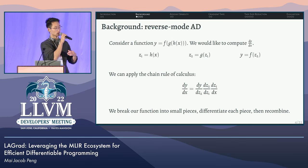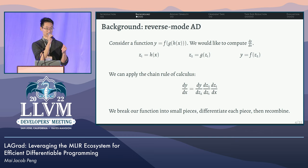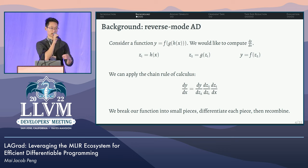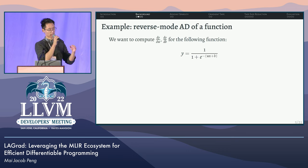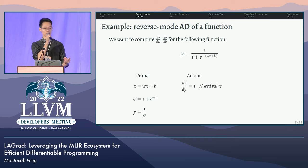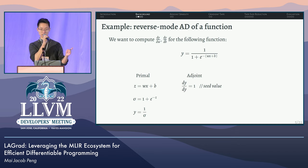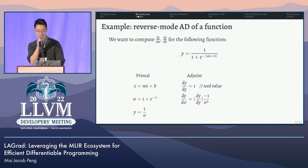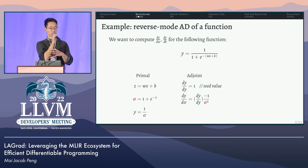I want to briefly go over some background with reverse mode AD. The takeaway is that if we have a function, we can break it down into small pieces, differentiate over each piece, and then use the chain rule from calculus to recombine our individual pieces into our overall desired derivative. To make this more concrete, consider a function where we would like to compute the derivatives of our output Y with respect to W and B. First we break down our function — we call this the primal — and name each intermediate value. To compute the adjoint, we begin by fixing the gradient with respect to the output: the derivative of Y with respect to Y is one, which we call the seed value. We then go one step back and back-propagate the derivative with respect to Y — that is the chain rule in action — and we also differentiate our division.